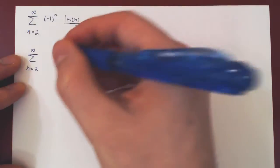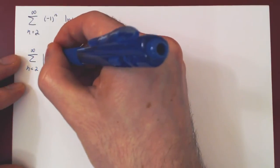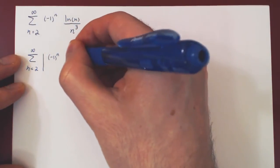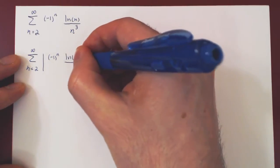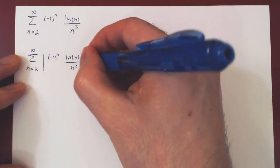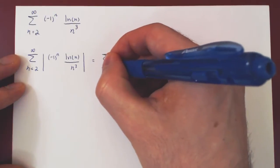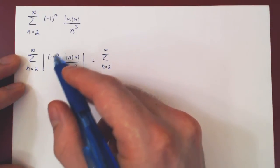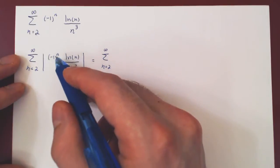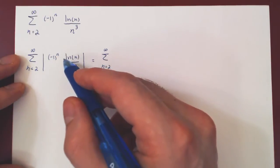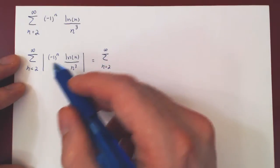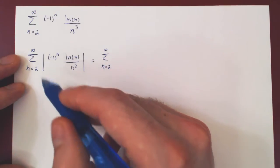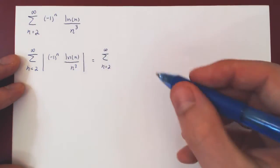So, summing from 2 to infinity, the terms of our sequence in absolute value. Negative 1 to n of power is plus or minus 1. In absolute value, this is 1, so it goes away. And as ln of n over n cubed is positive when n goes from 2 to infinity, we're left with ln of n over n cubed.